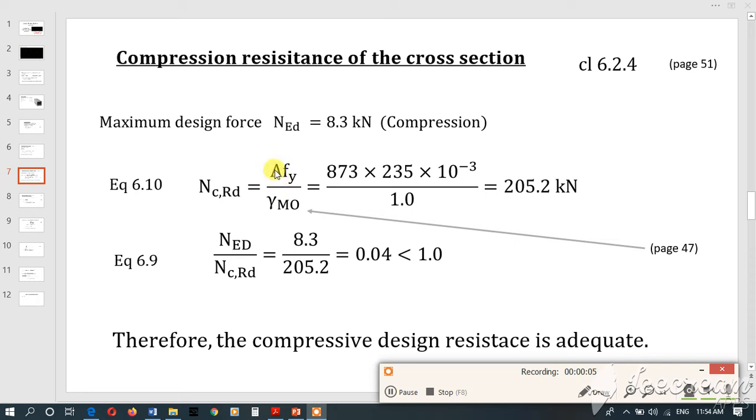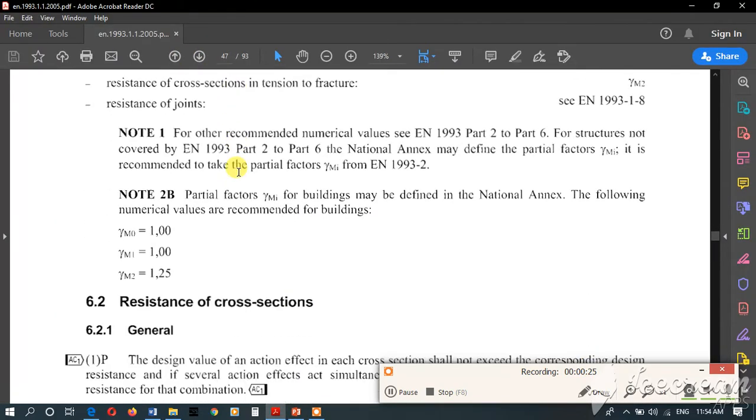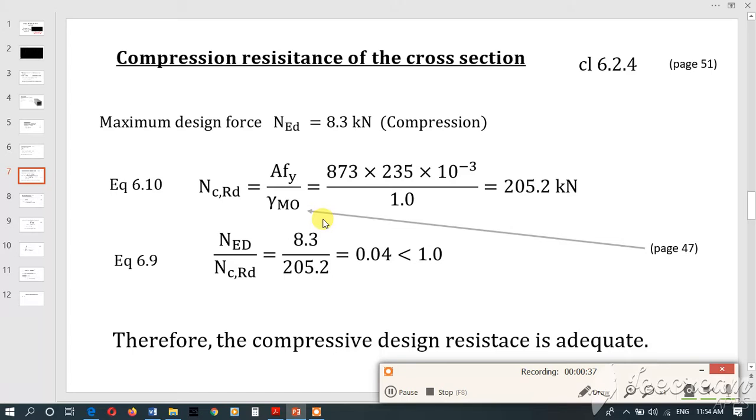The area can be obtained from section tables, and fy has already been determined. Gamma M0 value can be found on page 47 - gamma M0 equals 1. Now that all parameters are known, we can calculate ncr. Times 10 to the power minus 3 converts to kilonewtons. Since keeping the answer in newtons would be too large, we convert to kilonewtons.